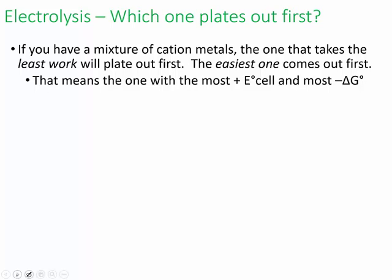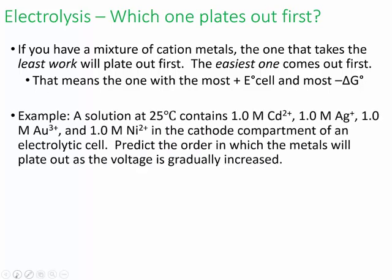Let's look at this example. You have a solution at 25°C, and things are one molar. This information is basically telling you that you can check the standard reduction potential table because the solution's at one molar and it's at standard temperature. You have a beaker with cadmium ions, silver ions, gold ions, and nickel ions, and then you're applying a current. Which ions are going to come out first?